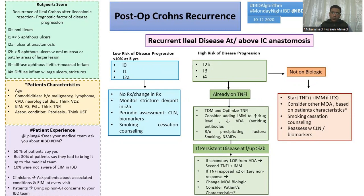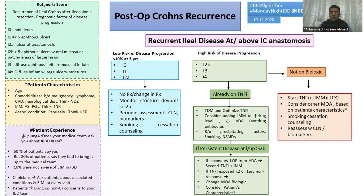If we have a score of i0, i1, or i2a, we have low-risk disease progression, low morbidity, and fewer complications for about five years. In this case, we have no plan for changing treatment or adding biologics. We may monitor with periodic assessment by colonoscopy and biomarkers, and smoking cessation is also very important in low-risk patients.